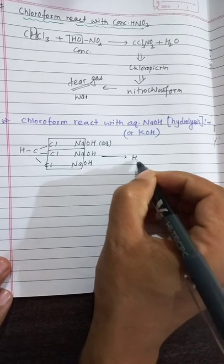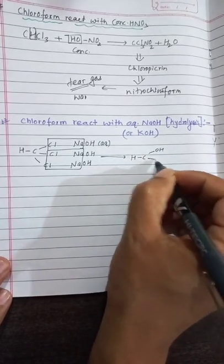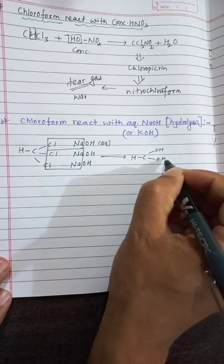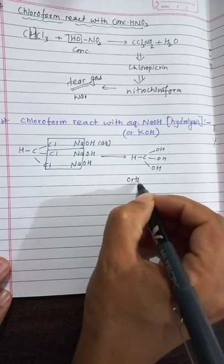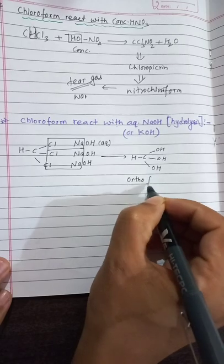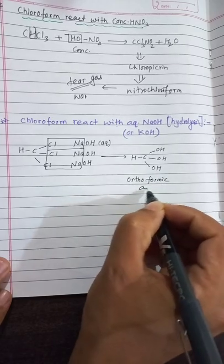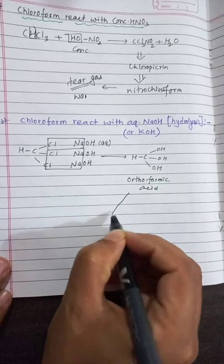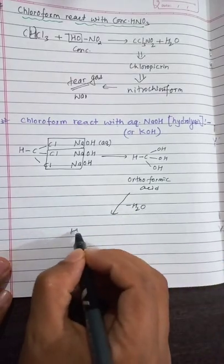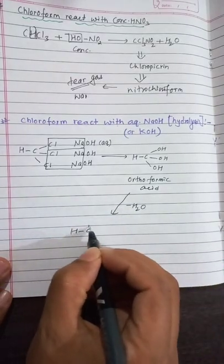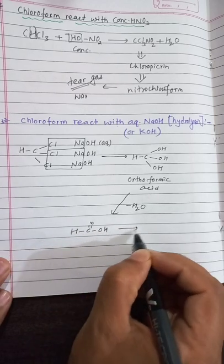The product formed is HC(OH)3 — orthoformic acid. Orthoformic acid is unstable and loses water to form HC(=O)OH, which is formic acid.